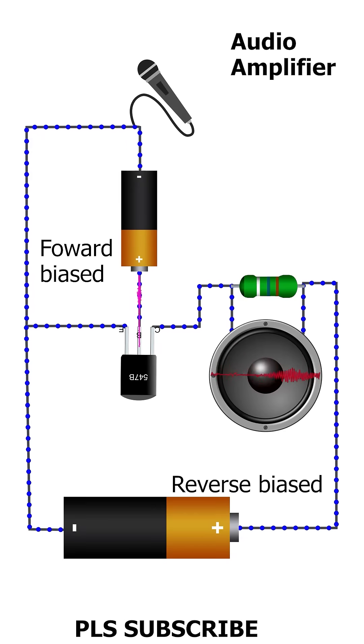As a result, the base current changes. These changes in the base current cause proportional shifts in the collector current, leading to signal amplification.